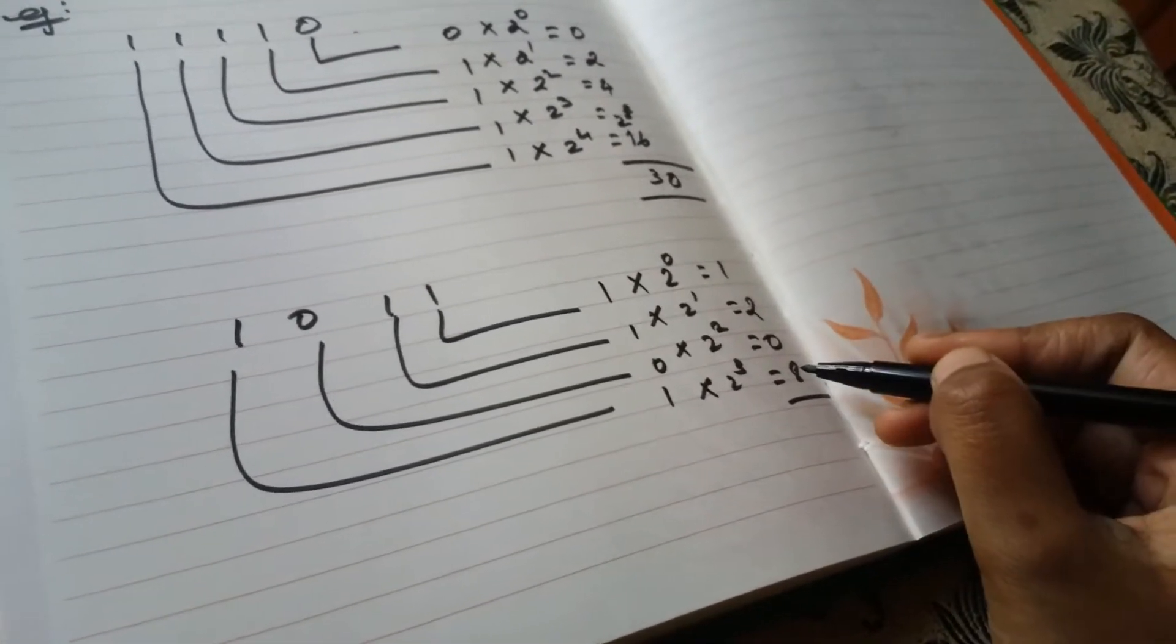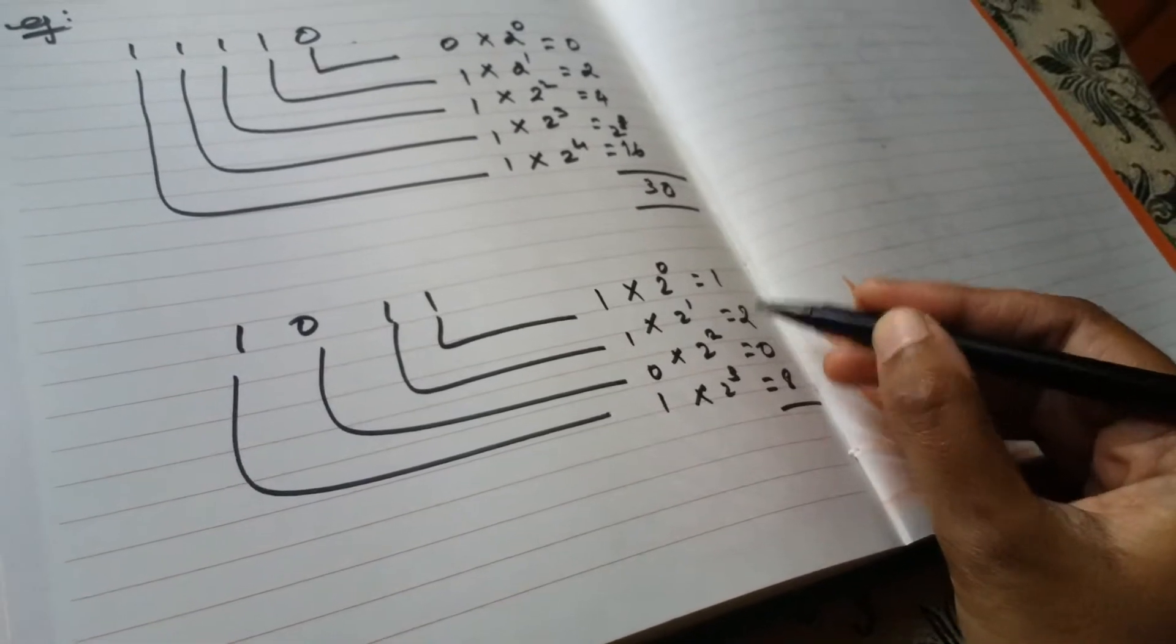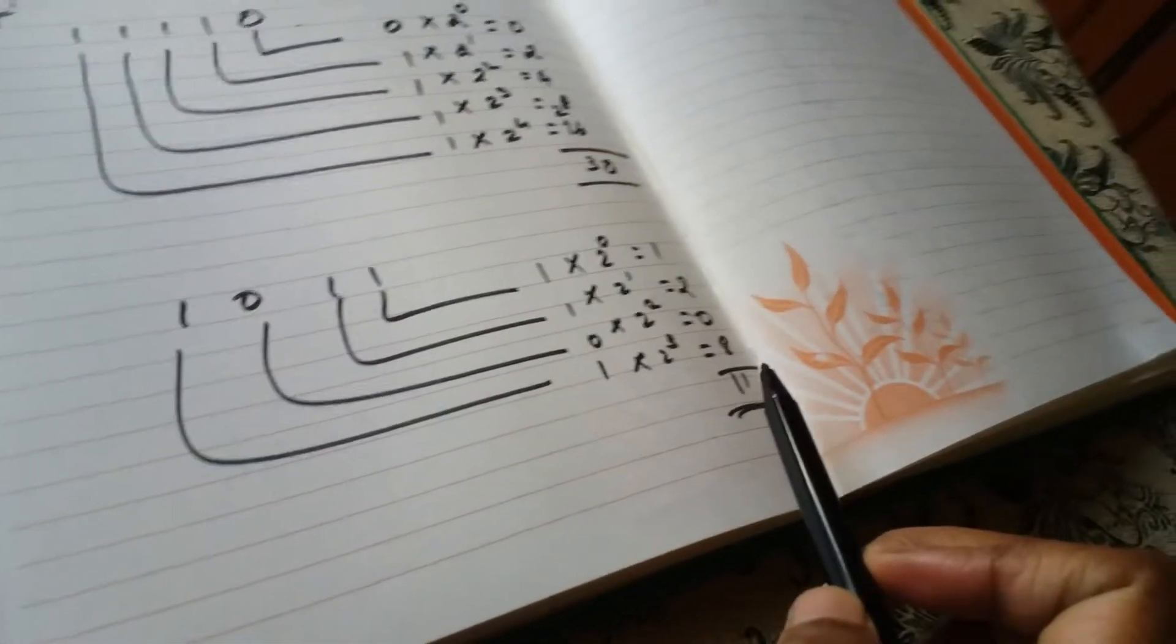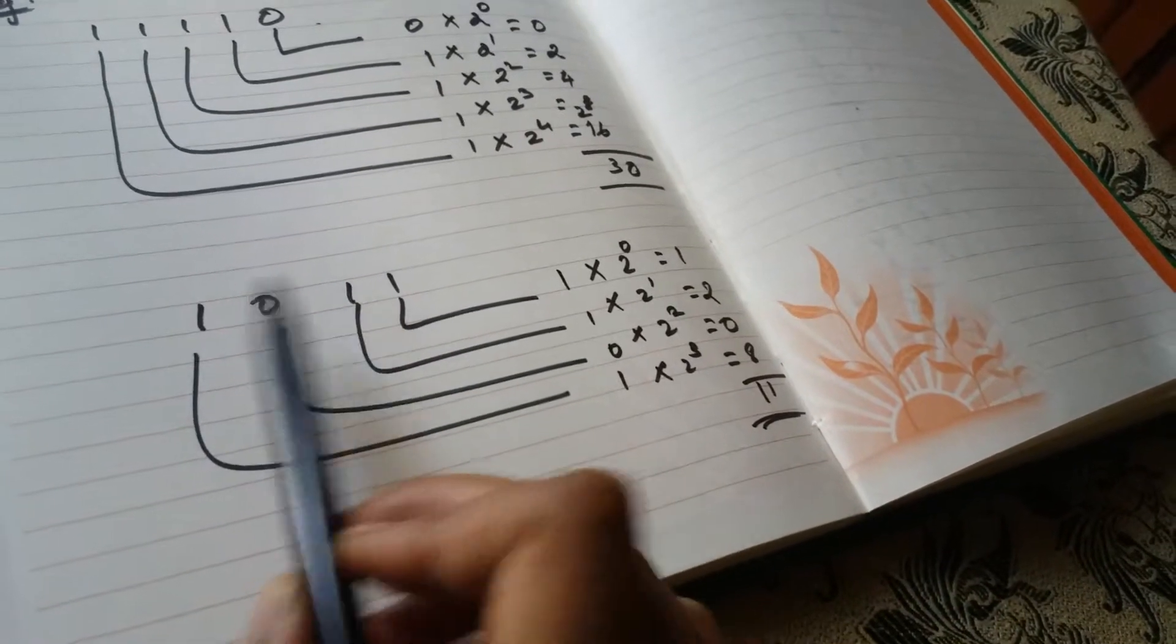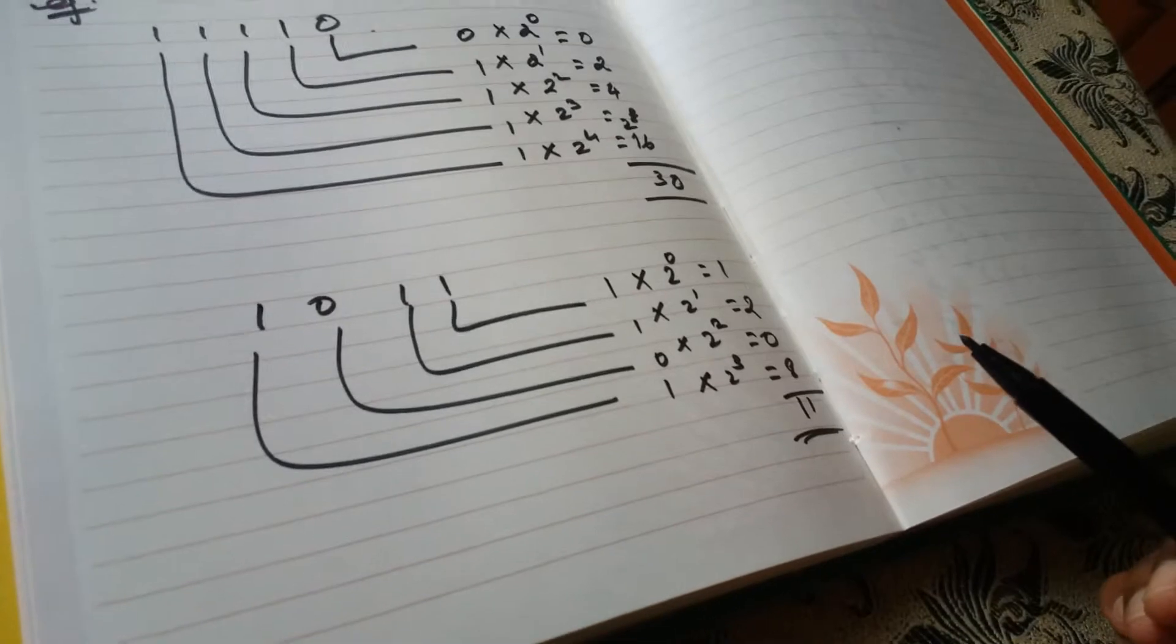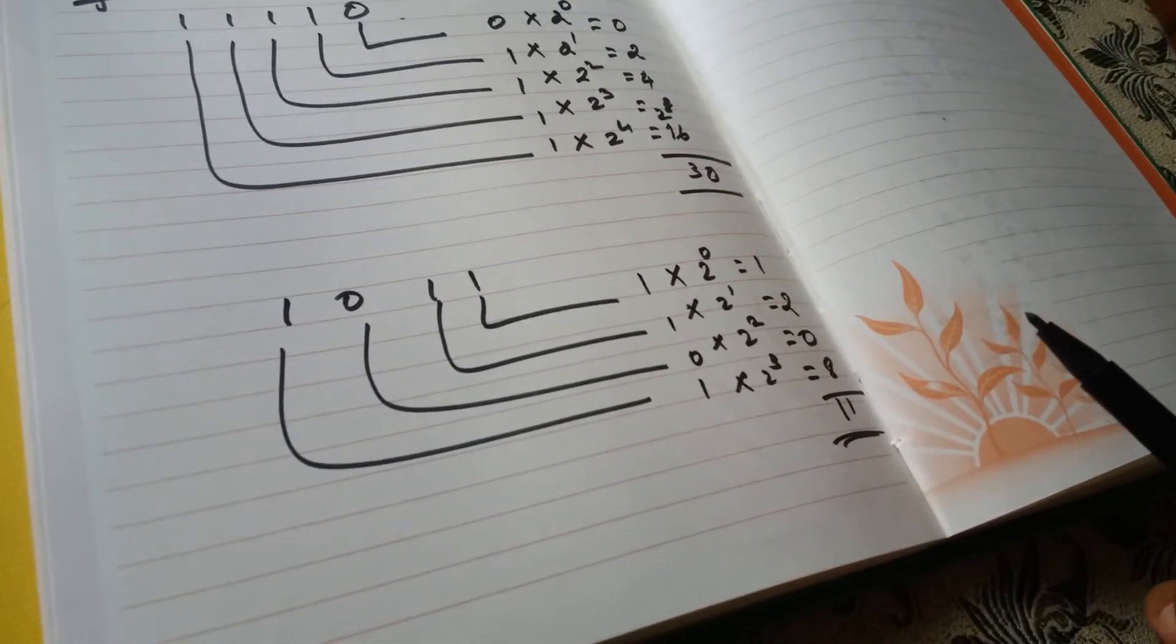So I add up everything. Eight plus two is ten, ten plus one, eleven. So the equivalent decimal value for one, zero, one, one is eleven. That's it, it's very simple. Do try. Thank you for watching.